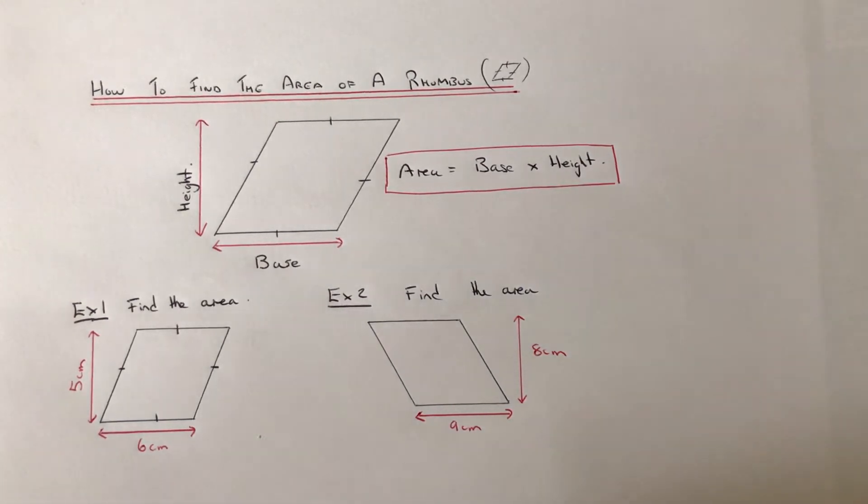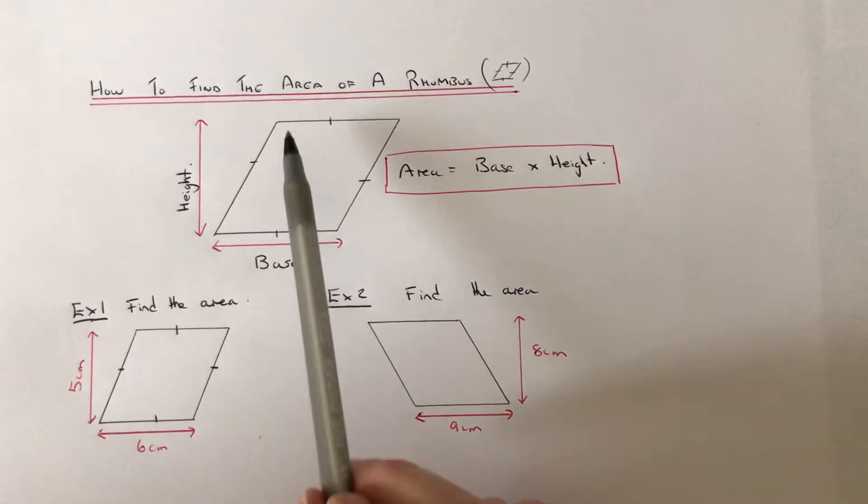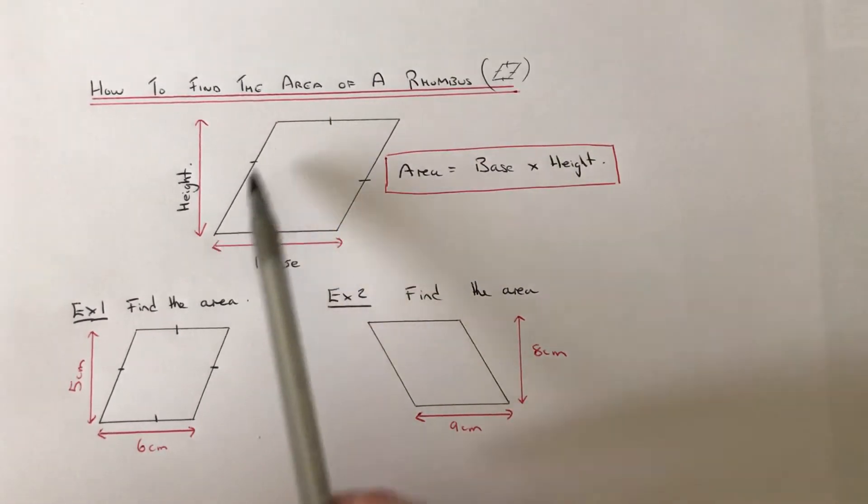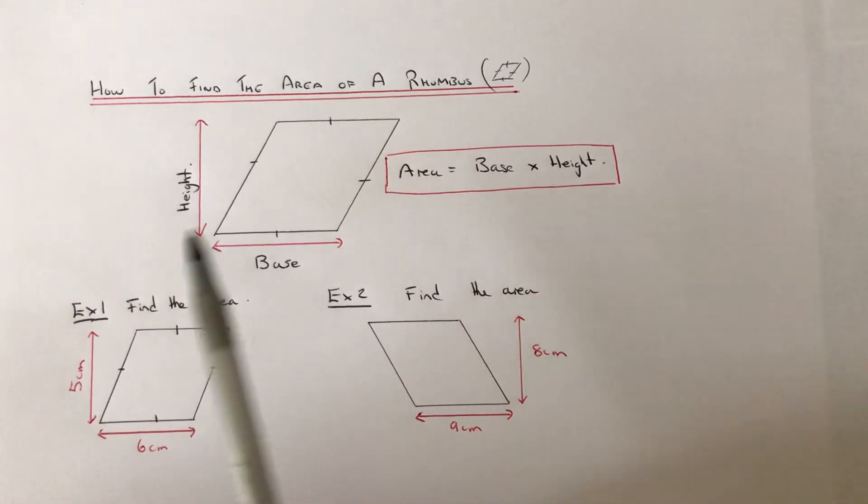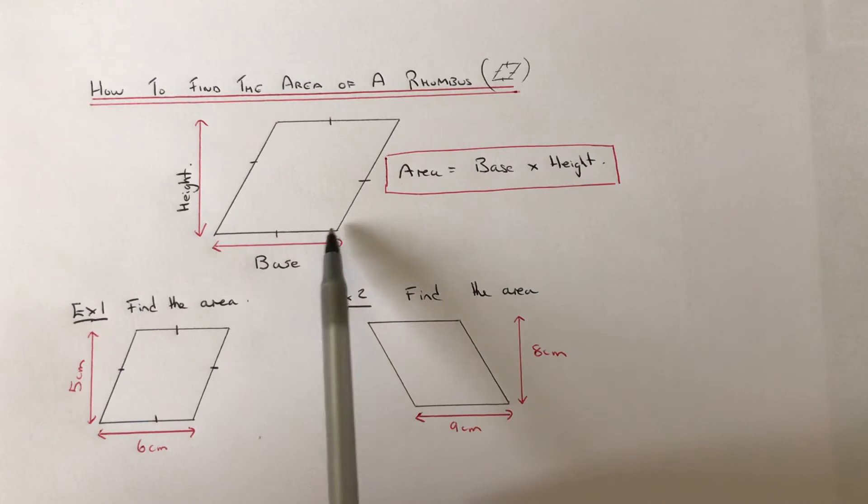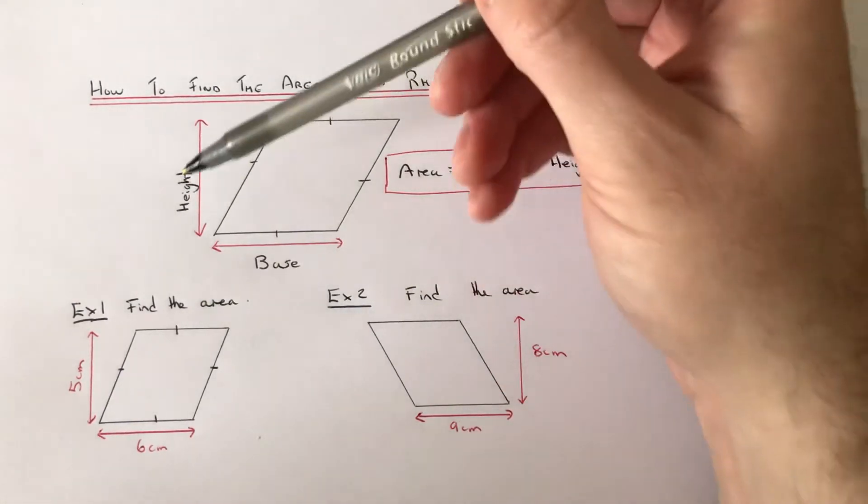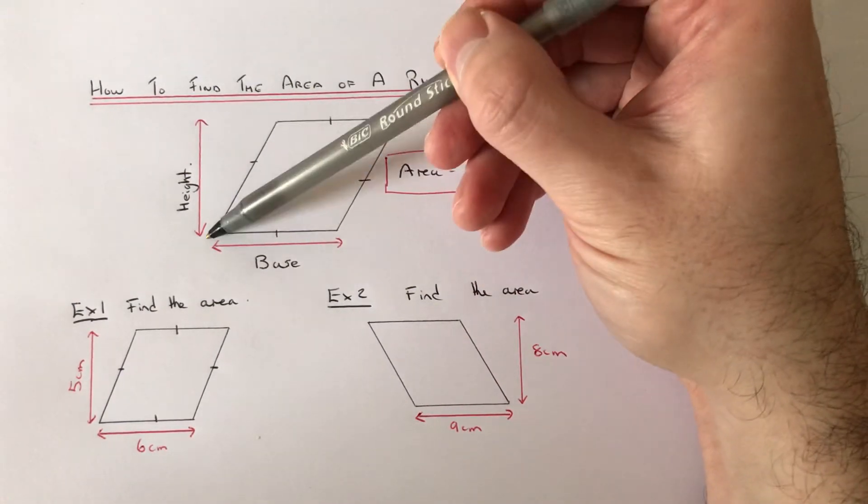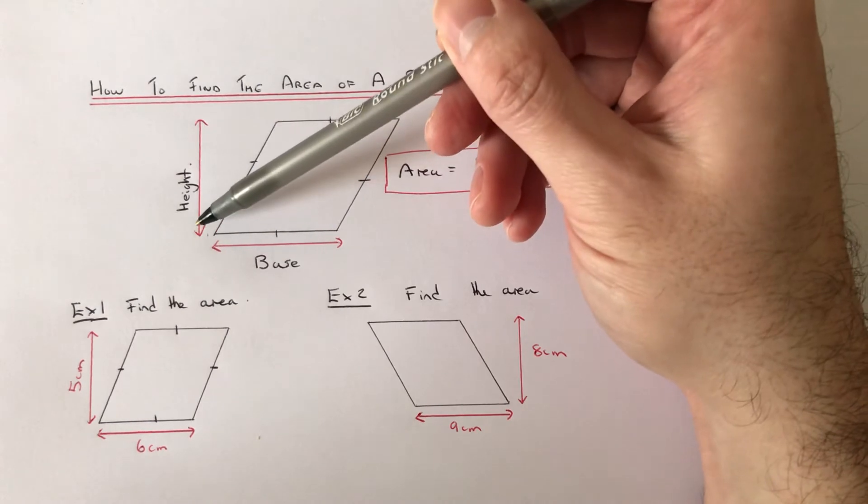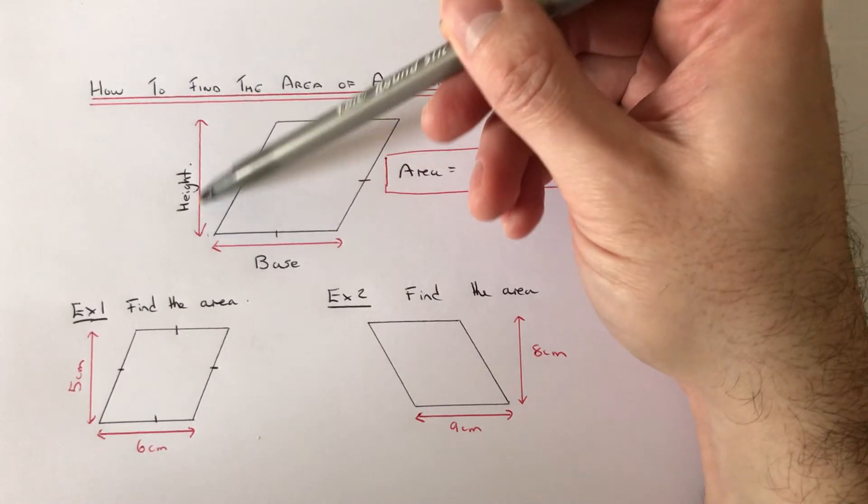Hi guys, welcome back. Today I'm going to show you how to work out the area of a rhombus. A rhombus is a shape with four equal side lengths, and to work out its area you just multiply the base of the rhombus by the perpendicular height. That's the height which is straight up from the bottom to the top.